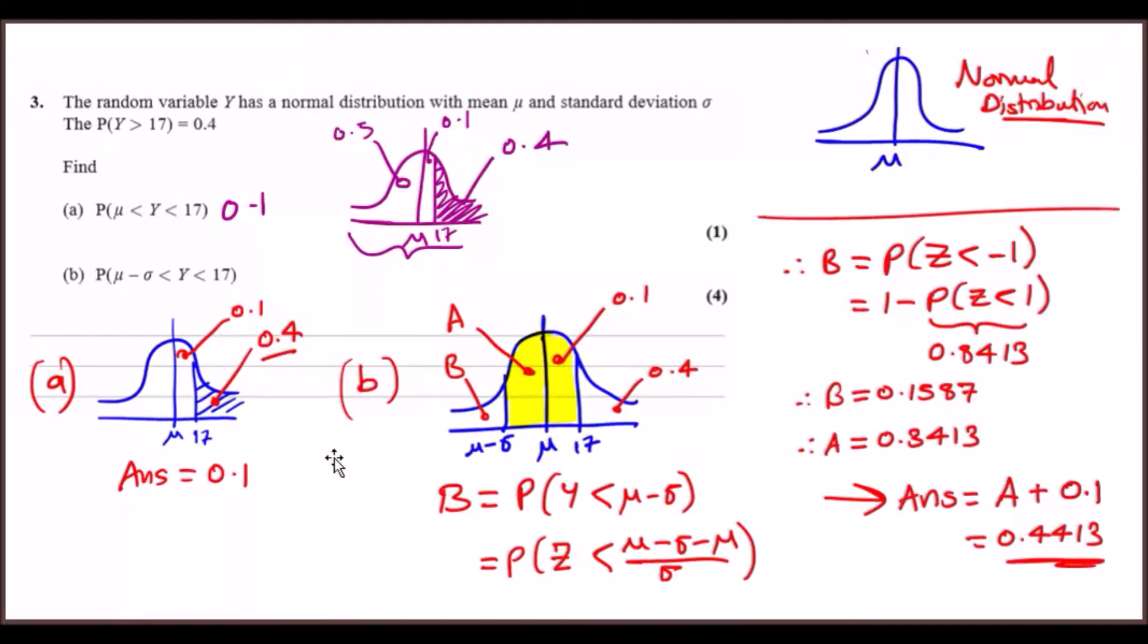Now part (b): find the probability that Y is between μ - σ and 17. To plot this carefully, we know where 17 is because we showed in the beginning 17 is on the right-hand side. But μ - σ, because it's the mean take away some variable, is going to be less than the mean.